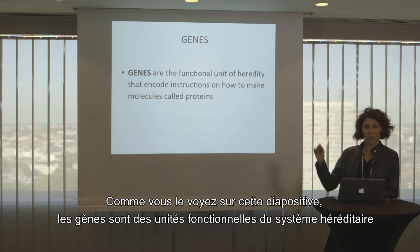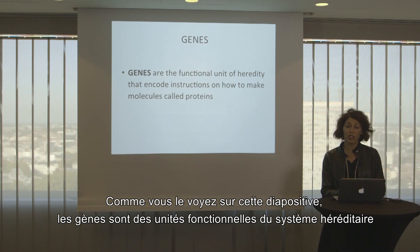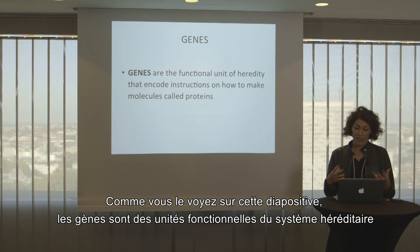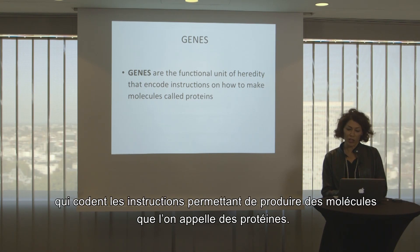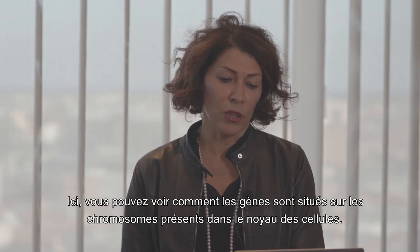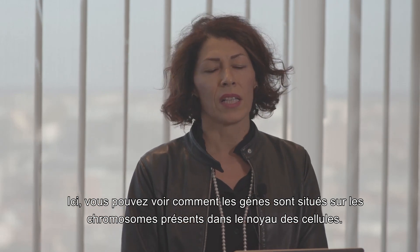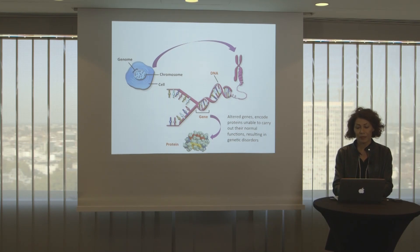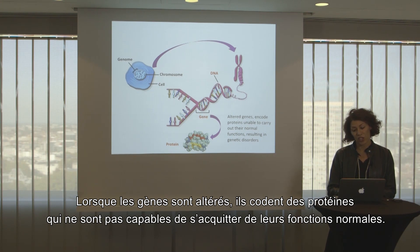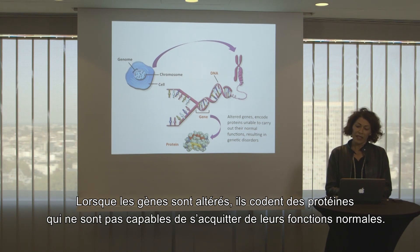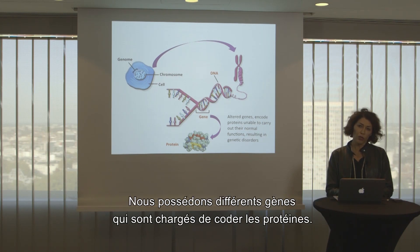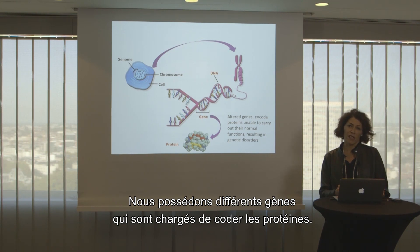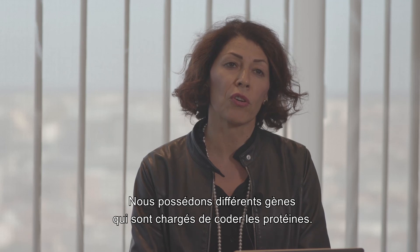As you can see in this slide, genes are the functional unit of the hereditary system that encodes instructions on how to make molecules called proteins. You can also see here how genes are located on chromosomes in the nucleus of cells. When there are altered genes, they could encode proteins that are unable to carry out their normal function.